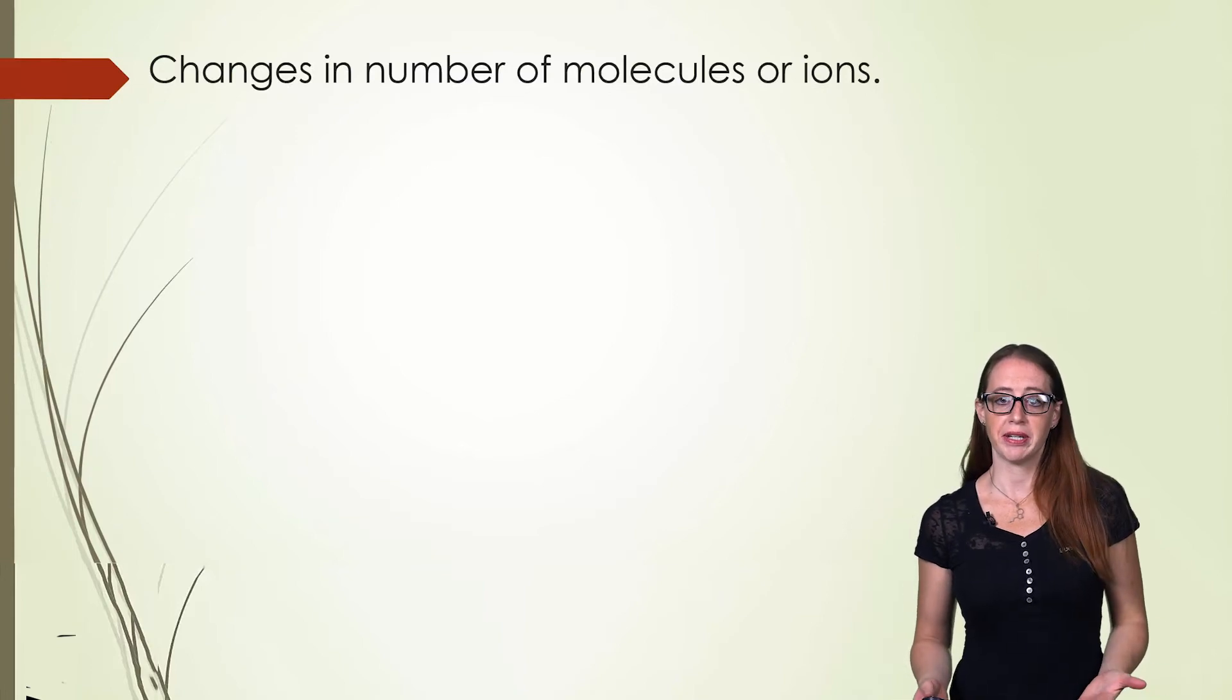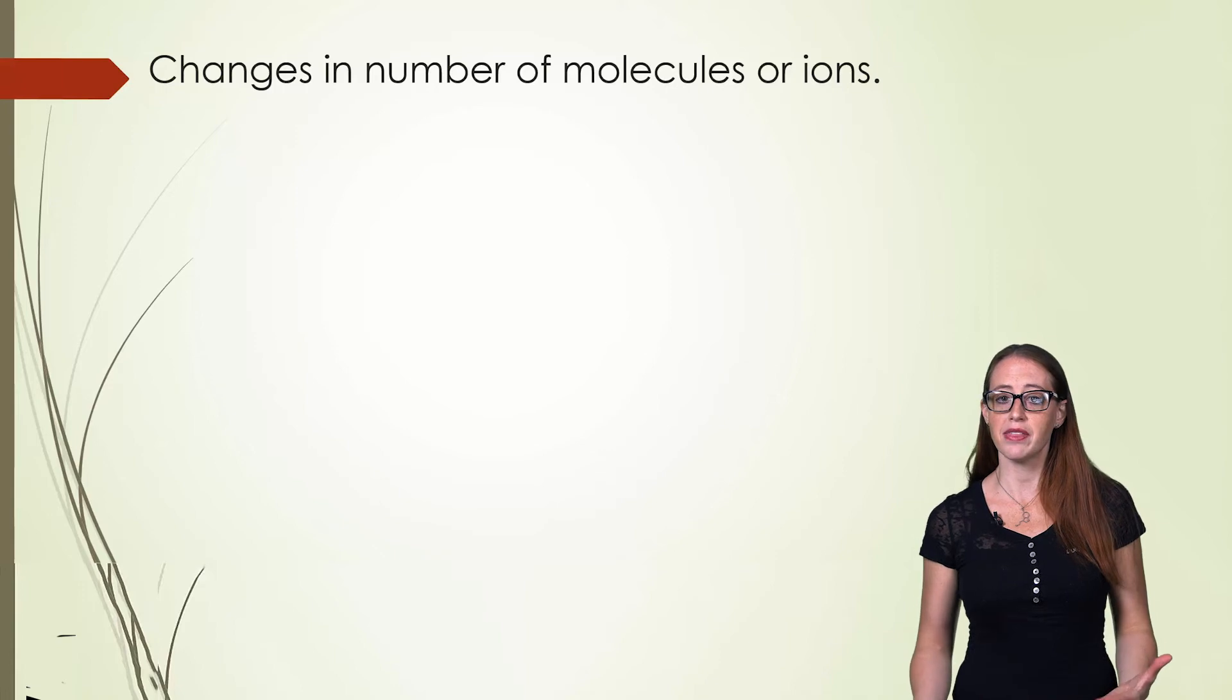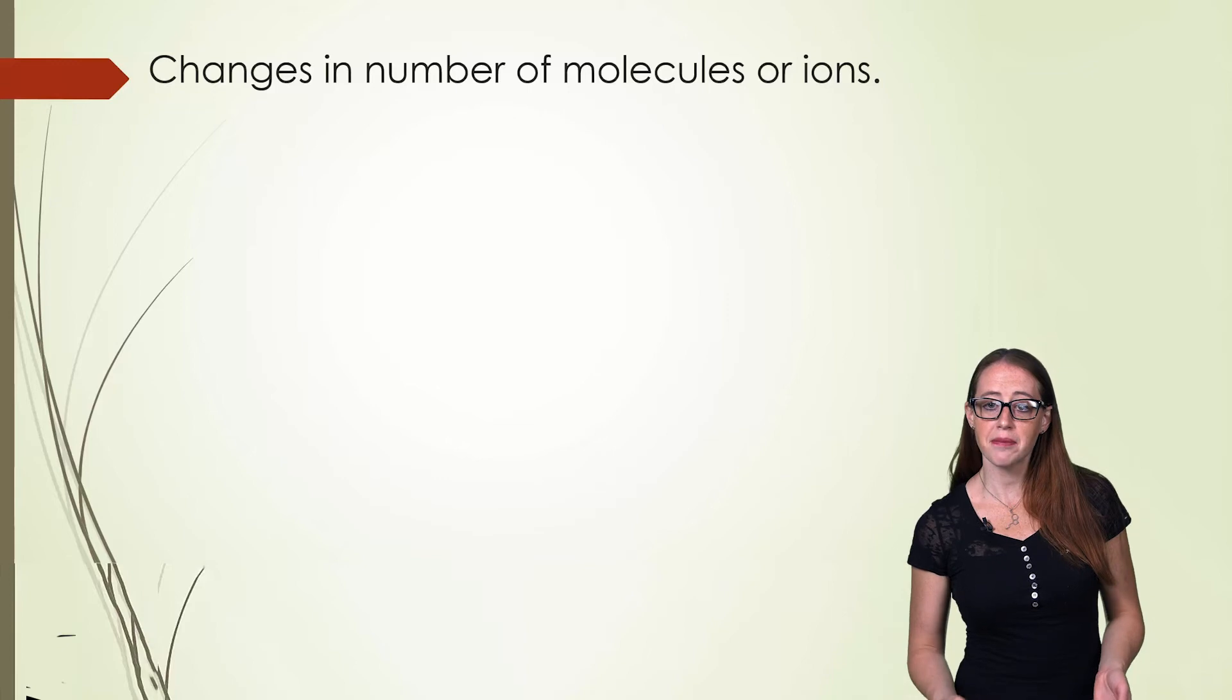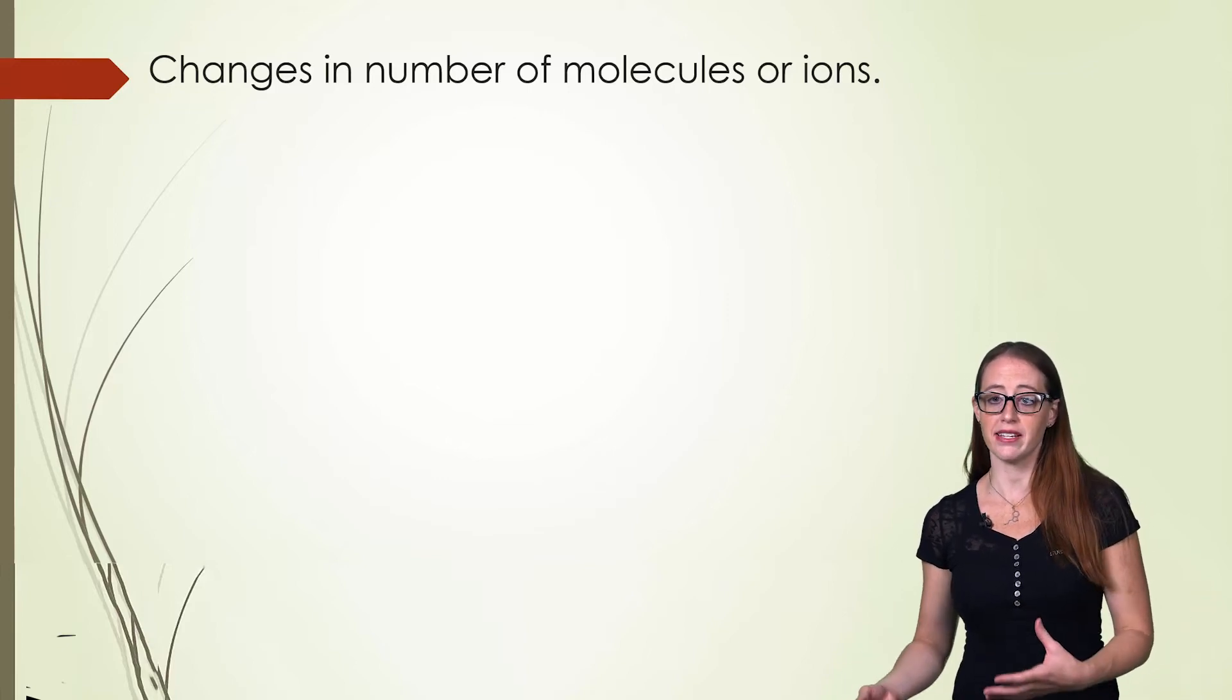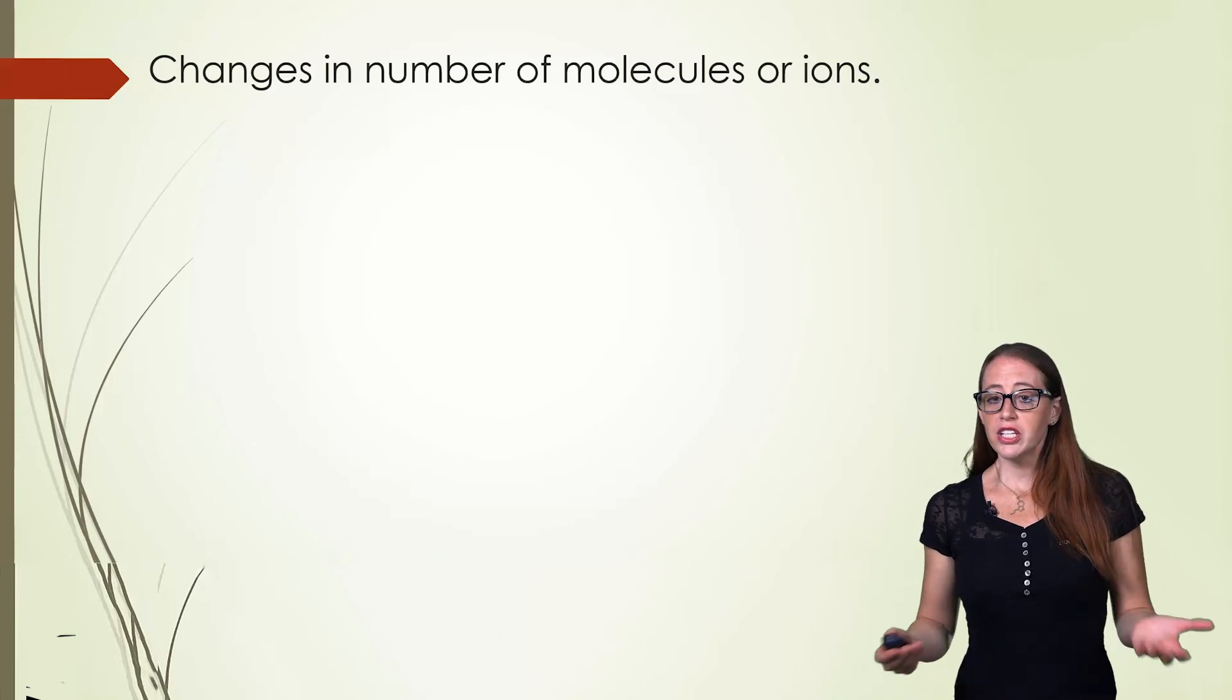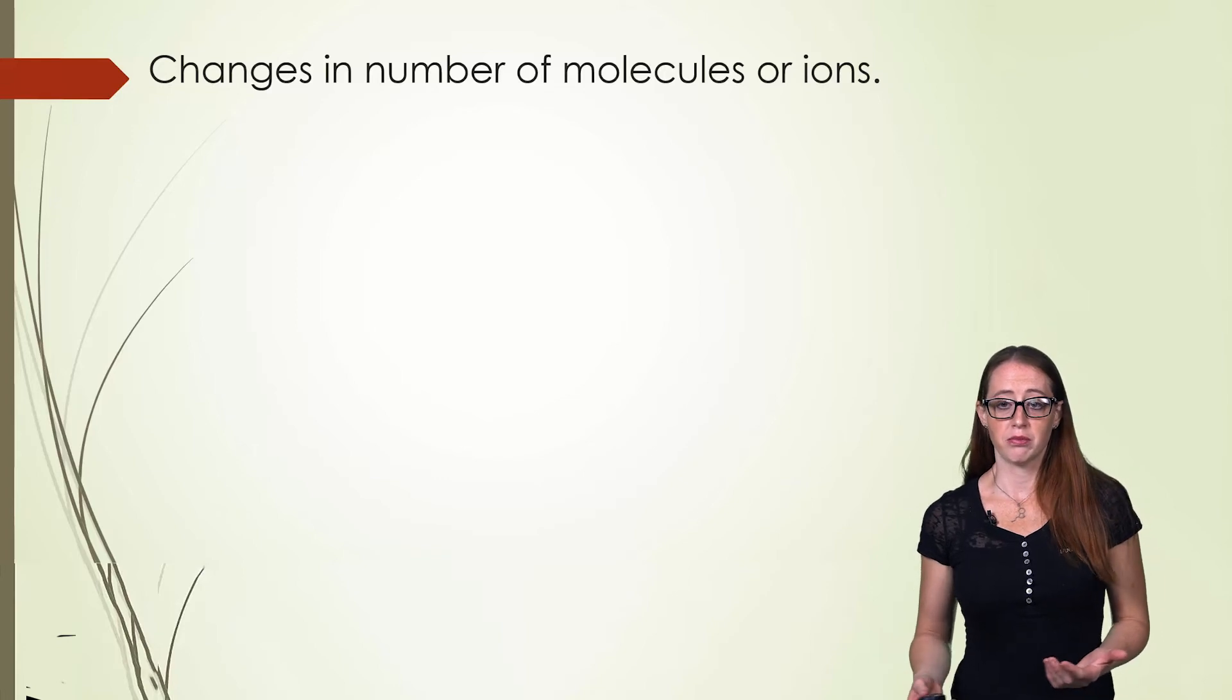Another thing that can change entropy is the number of moles of a species. This too makes sense if we think about what is more random and can have more configurations. Something that is made up of 10 things or something that is made up of 20 things, we can think about to model this. We can use balanced chemical reactions to consider the number of moles of each species.